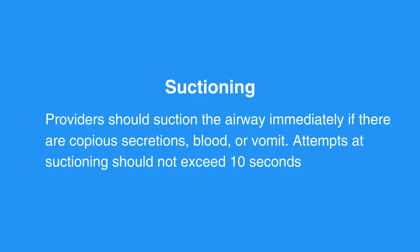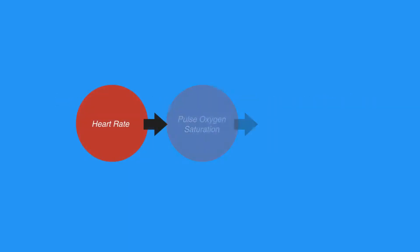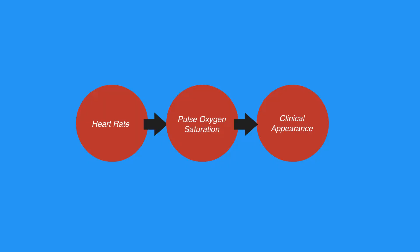Attempts at suctioning should not exceed 10 seconds. To avoid hypoxemia, follow suctioning attempts with a short period of 100% oxygen administration. Monitor the individual's heart rate, pulse oxygen saturation, and clinical appearance during suctioning. If you see a change in monitoring parameters, then interrupt suctioning and administer oxygen until the heart rate returns to normal and until clinical condition improves. Assist ventilation as warranted.